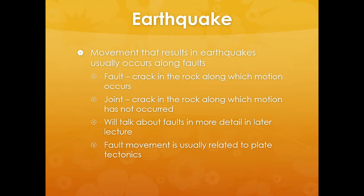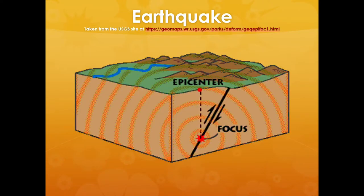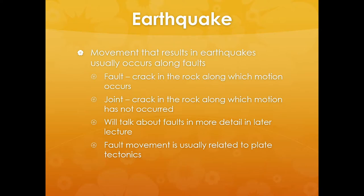When we talk about earthquakes occurring, the focus is right along a fault. We've got the fault where there's movement of the hanging wall and the foot wall. This is a reverse fault because the hanging wall is moving up relative to the foot wall. There's movement along that crack or fault — that's where earthquakes occur. A fault is a crack along which motion has occurred; joints are cracks in the rock along which motion has not occurred. Fault movement is usually related to plate tectonics, which we've talked about at length.